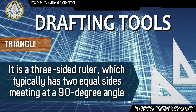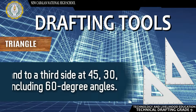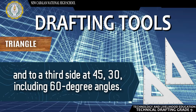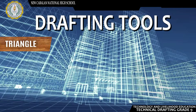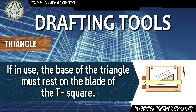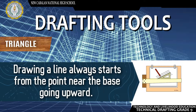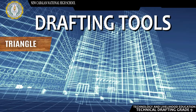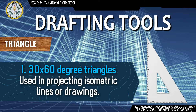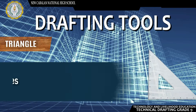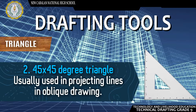Triangle — It is a three-sided ruler which typically has two equal sides meeting at a 90-degree angle and a third side at 45, 30, or 60-degree angles. It is usually made of plastic and comes in different sizes. When in use, the base of the triangle must rest on the blade of the T-square. Drawing a line always starts from the point near the base going upward. Commonly used triangles are: the 30×60-degree triangle, used in projecting isometric lines or drawings; and the 45×45-degree triangle, usually used in projecting lines in oblique drawing.